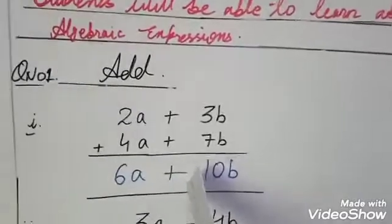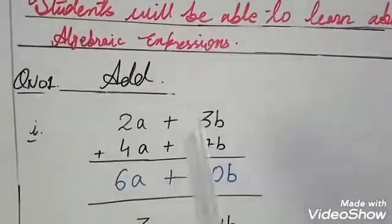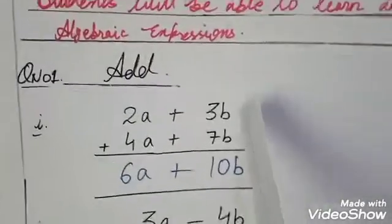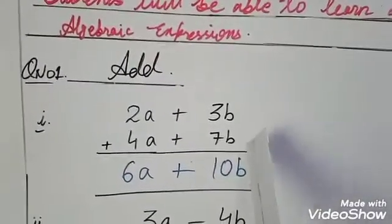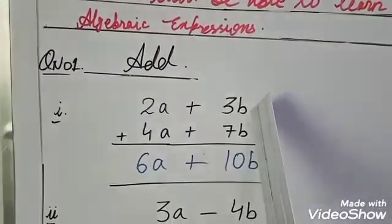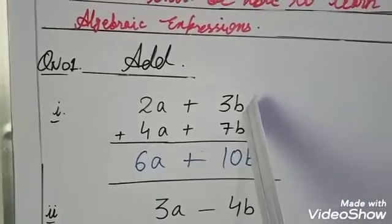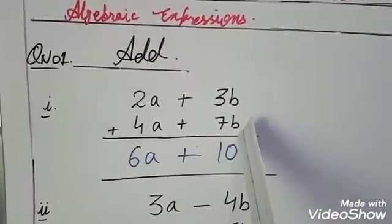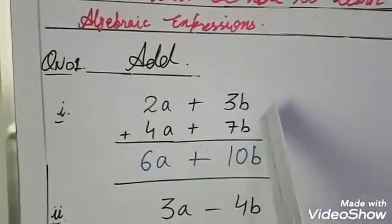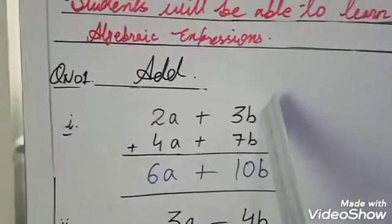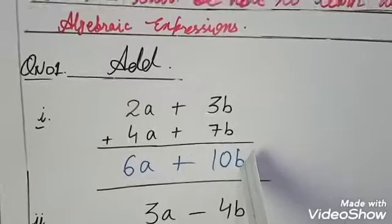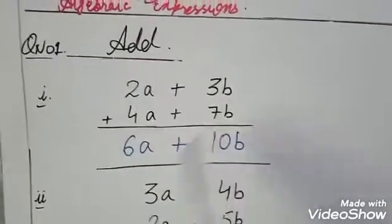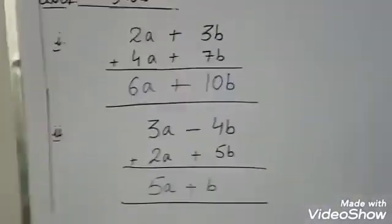As you know, same signs give the same sign — plus plus gives plus, and minus minus gives plus. So 3b plus 7b: 3b means b is there 3 times, 7b means b is there 7 times, so adding gives 10b. Therefore, the solution is 6a plus 10b.